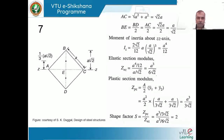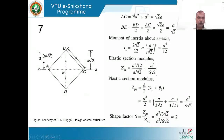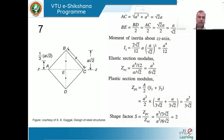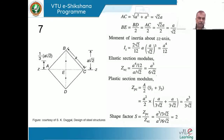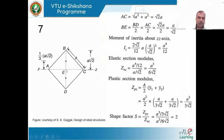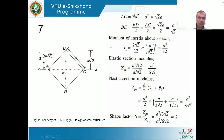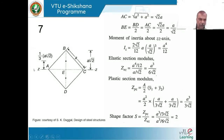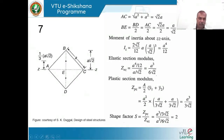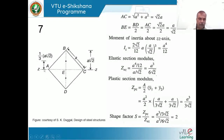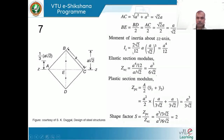The moment of inertia can also be derived from first principles using the triangle formula. The square rotated 45° consists of two triangles. The horizontal width at the widest point is a√2, and the vertical depth from centroid to apex is a/√2 = 0.707a. The centroid of each triangle is at a/3 of its height from the base, i.e., at a/(3√2) from the zz axis.